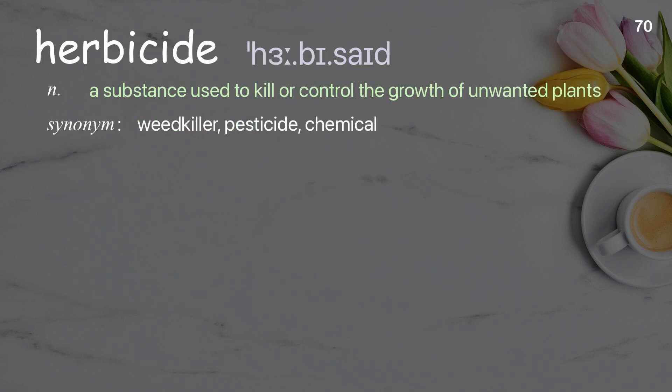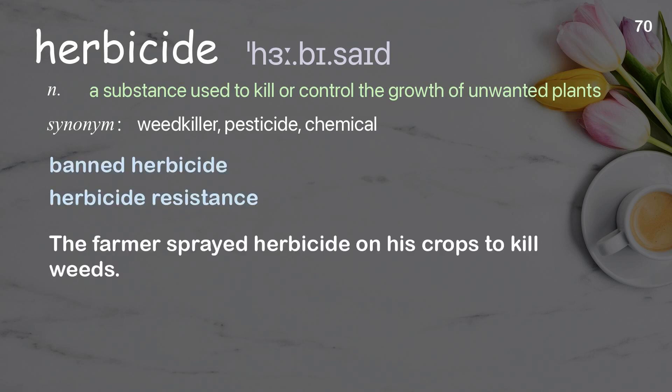Herbicide: A substance used to kill or control the growth of unwanted plants. Examples: Banned herbicide, Herbicide resistance. The farmer sprayed herbicide on his crops to kill weeds.